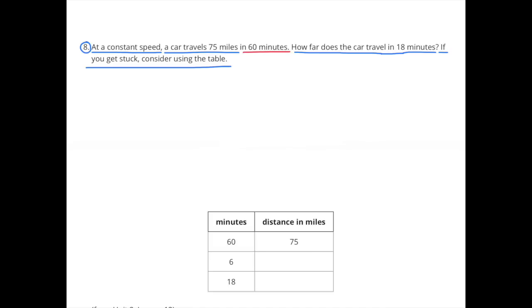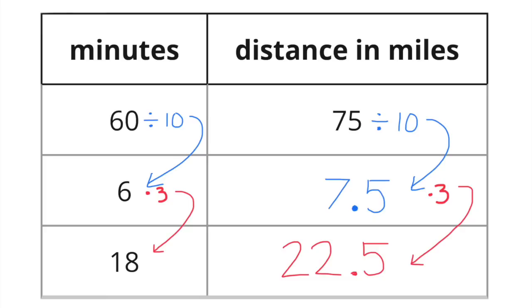Number 8: At a constant speed, a car travels 75 miles in 60 minutes. How far does the car travel in 18 minutes? If you get stuck, consider using the table. They've already told us that in 60 minutes the car can travel 75 miles. Let's divide the 60 by 10 to get 6, because I know I can multiply the 6 times 3 to get 18. Whatever we do on this column, we must do on the other column. 75 divided by 10 equals 7.5. Now we multiply that by 3, and it gives us 22.5. So the car can travel 22.5 miles in 18 minutes.